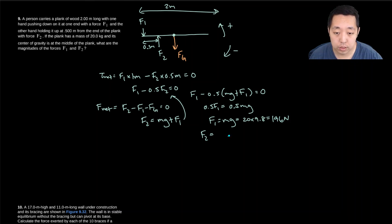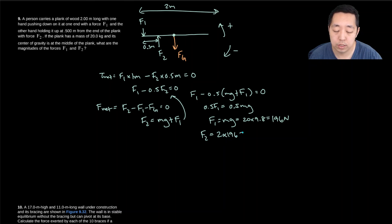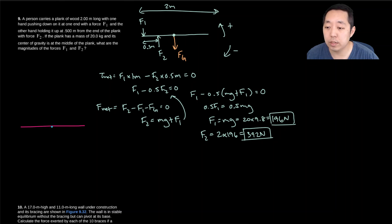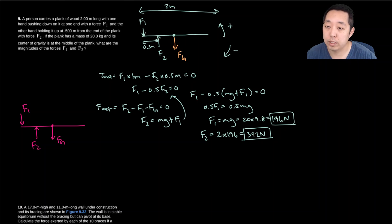Since F1 = (1/2)F2, we get F2 = 2 × F1 = 2 × 196 = 392 newtons. There's another way to do this problem. Instead of picking the center as the point of rotation, I could pick the point where F2 acts as the reference point. The relevant distances would then be 0.5 meters on each side.